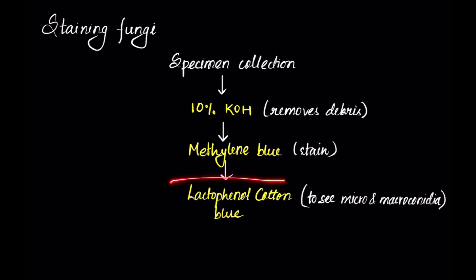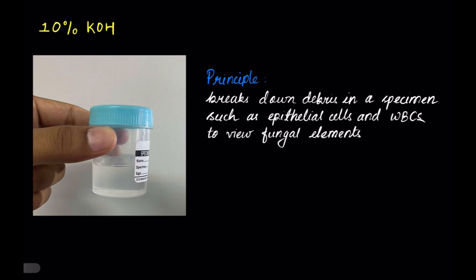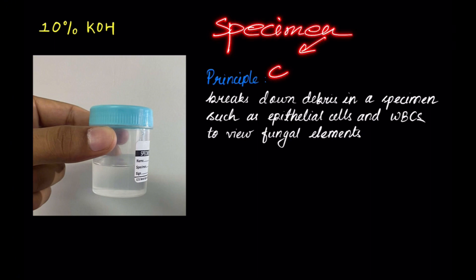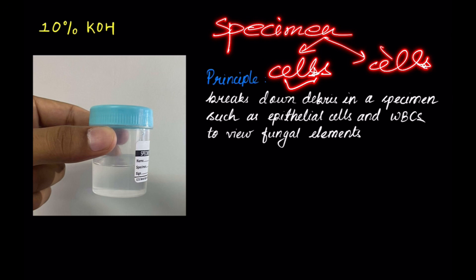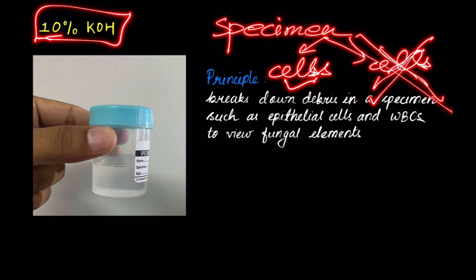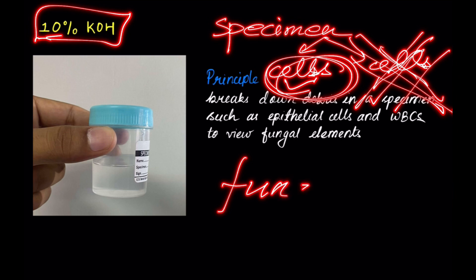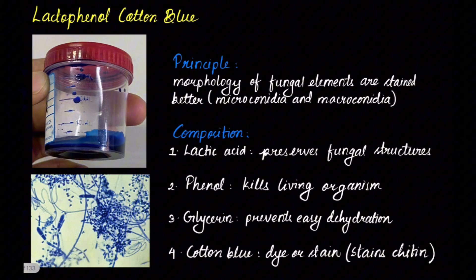Now let's look at the various reagents. First, 10% KOH — the fungal specimen is collected and can contain both fungal cells of interest and cells not of interest like epithelial cells. What 10% KOH does is remove the debris and cells that are not of interest, so that only the fungal elements remain.